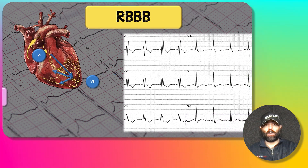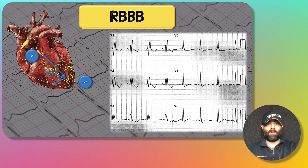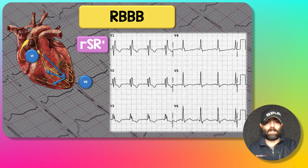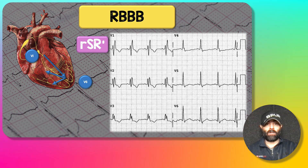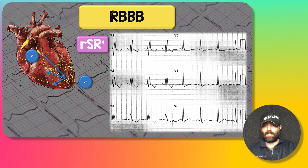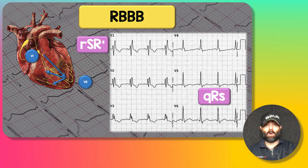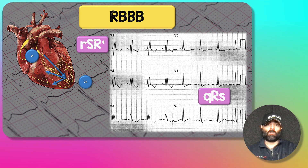Here are the precordial leads from someone with a right bundle branch block. You can see the RSR-prime pattern — depolarization initially going away from V1, then coming back across to the right giving the predominant R-wave, the rabbit ears pattern in V1. In V6, there's a big R-wave as depolarization moves toward V6, and then a slurred S-wave as depolarization moves back across to the right ventricle.